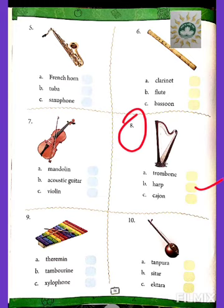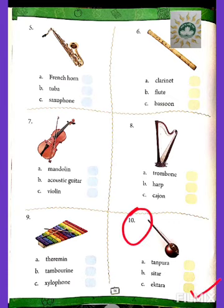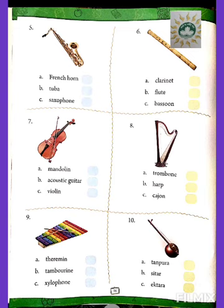The eighth one is a harp, which was played during early ancient days in the British era. Number nine is the xylophone — it's a very colorful musical instrument. And the last one is the Iktara.